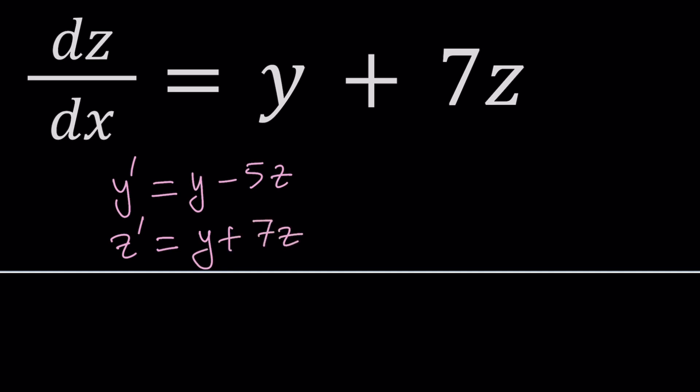So at this point, you might be thinking, can we just eliminate y from these equations? Or z? Yes, but that's not going to be very helpful, because you're still going to have y prime and z prime and z in the same equation. Let's do something better than that.